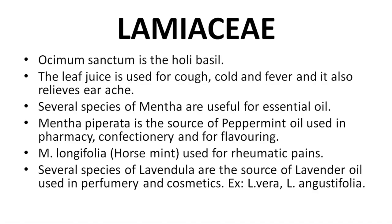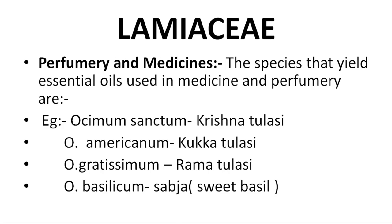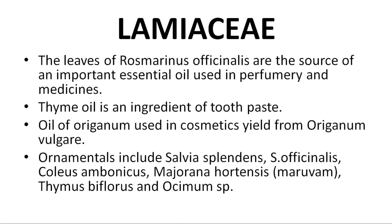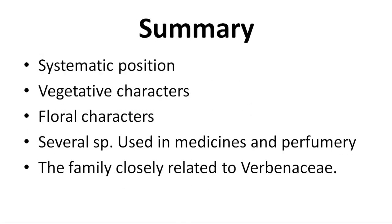Examples of Ocimum species: O. sanctum (Krishna tulsi), O. americanum (kukka tulsi), O. gratissimum (rama tulsi), and O. basilicum (sweet basil/subja). Rosmarinus officinalis essential oil is used in perfumery and medicines. Thyme oil is used as an ingredient in toothpaste. Oil of Origanum (O. vulgare) is used in cosmetic preparations. Ornamental plants in Lamiaceae: Salvia splendens, S. officinalis, Coleus ambonicus, Majorana hortensis, Thymus biflorus, and Ocimum species. Majorana hortensis is known as the maruvam plant.